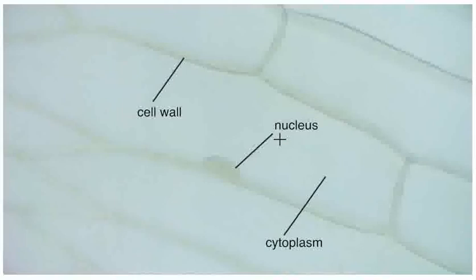Why do you think you cannot see any chloroplasts? They are not present in the cells of the epidermis because this part of the onion grows underground where there is no sunlight for photosynthesis.